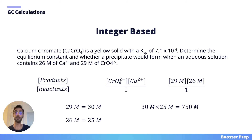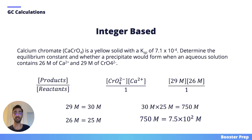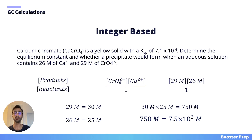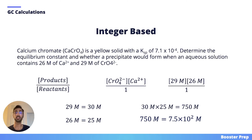Before we can compare it to the solubility product constant given in the question, we simply convert this value into scientific notation, which gives us 7.5 times 10 to the negative 2. Since the value we calculated for our solution is greater than the value given, we know that this reaction will proceed in the reverse direction and calcium chromate will precipitate. Just like that, we're able to turn a nasty calculation into an easy one.